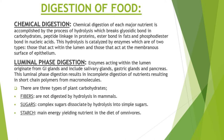This hydrolysis is catalyzed by enzymes of two types: enzymes present in the lumen and enzymes present at the membranous surface of the epithelium. The enzymes acting within the lumen account for the luminal phase digestion. These enzymes originate from the gastrointestinal glands including salivary glands, gastric glands and pancreas. Digestion in the lumen results in incomplete digestion of nutrients, producing short chain polymers from macromolecules.